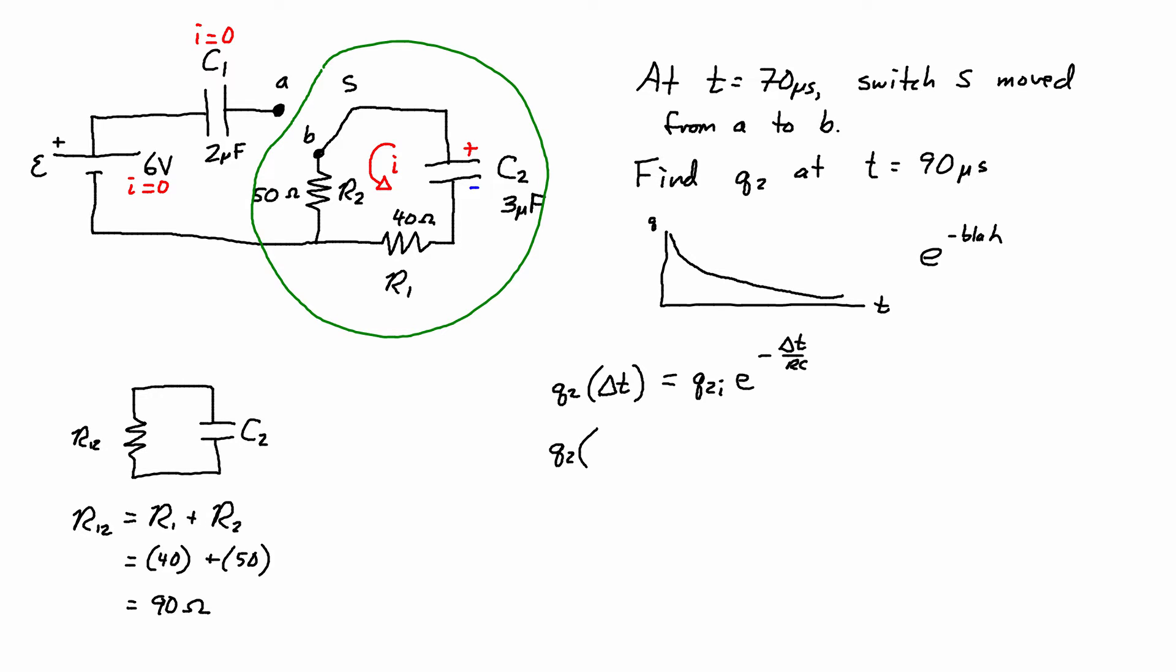When we substitute into the discharging equation though we need to be clear about what we mean for delta T. Now delta T is 90 microseconds minus 70 microseconds. Q2 initial came from the first part of the problem so we have 5.5 times 10 to the negative 6 coulombs.